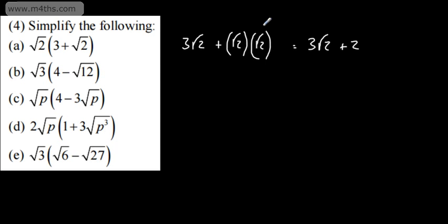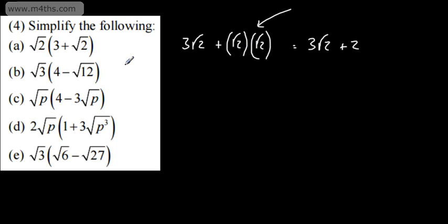I've multiplied out the brackets and used the laws of surds to simplify root 2 times root 2, which gives us 2. If you're unfamiliar with this property, go back and check the videos prior to this as we've looked at this one.